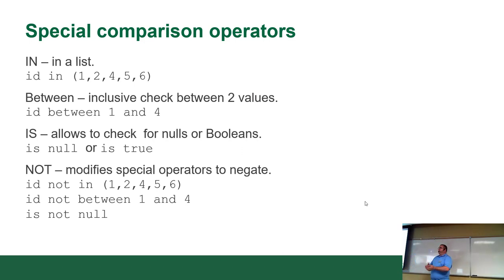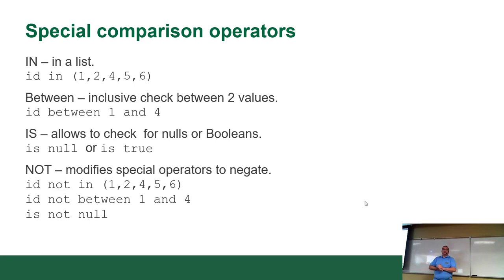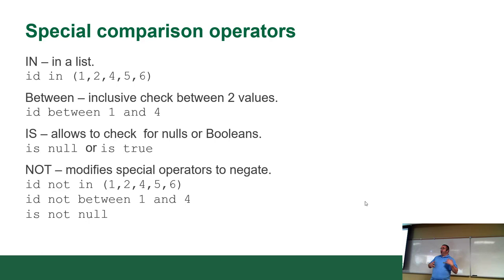There are other operators beyond the standard ones. IN checks if a value is in a list — you provide a series of values and if anything matches, those rows are returned. BETWEEN is inclusive: if I say ID BETWEEN 1 AND 4, it returns 1, 2, 3, and 4. That's why it's called inclusive — it includes the goalposts at each end.